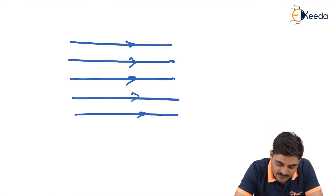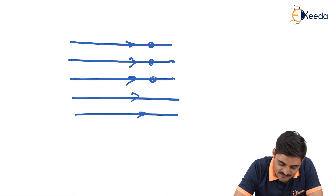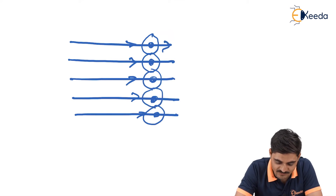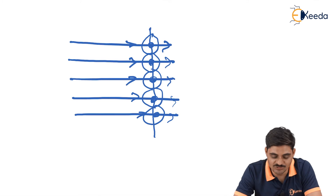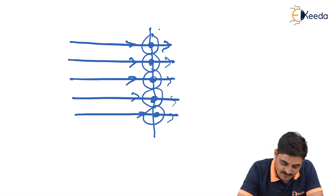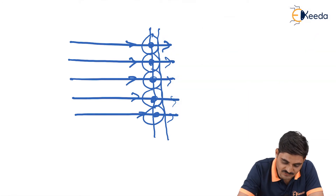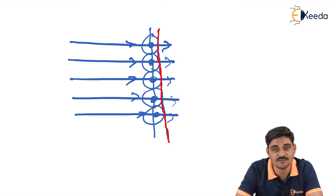To draw the plane wavefront, we apply Huygens principle: each point on the wavefront acts as a secondary wavelet. These wavelets are secondary sources of light spreading in the forward direction. This was our first wavefront, and according to Huygens principle, the position of the new wavefront is obtained by drawing a tangent to these wavelets, giving us the next wavefront. This was the primary wavefront; this is the secondary wavefront.